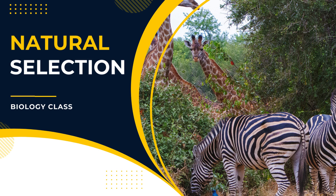Differential reproduction refers to the idea that individuals with certain traits are more likely to survive and pass on their genes to the next generation. Organisms with advantageous traits are more likely to survive and reproduce, leading to gradual change in a population over time, as seen in the giraffe example. In summary, natural selection is a fundamental mechanism driving the diversity of life, shaping the evolution of species over time.